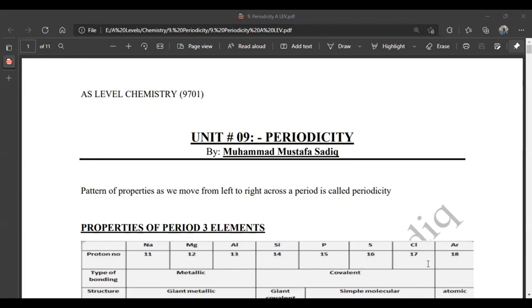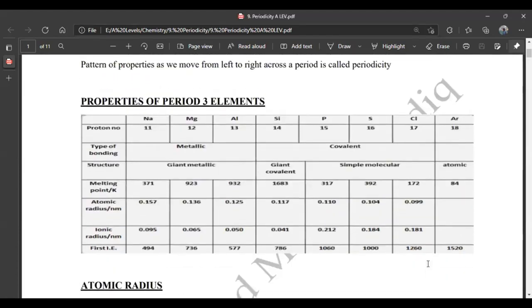If we look at the properties of period three elements, then we see that the proton number is increasing from sodium to argon.